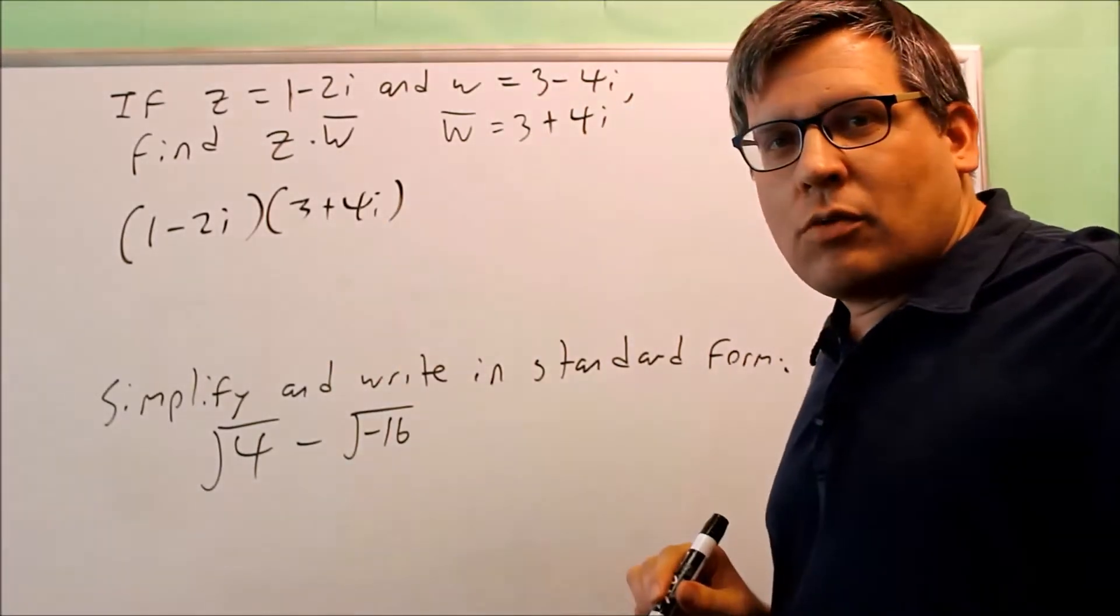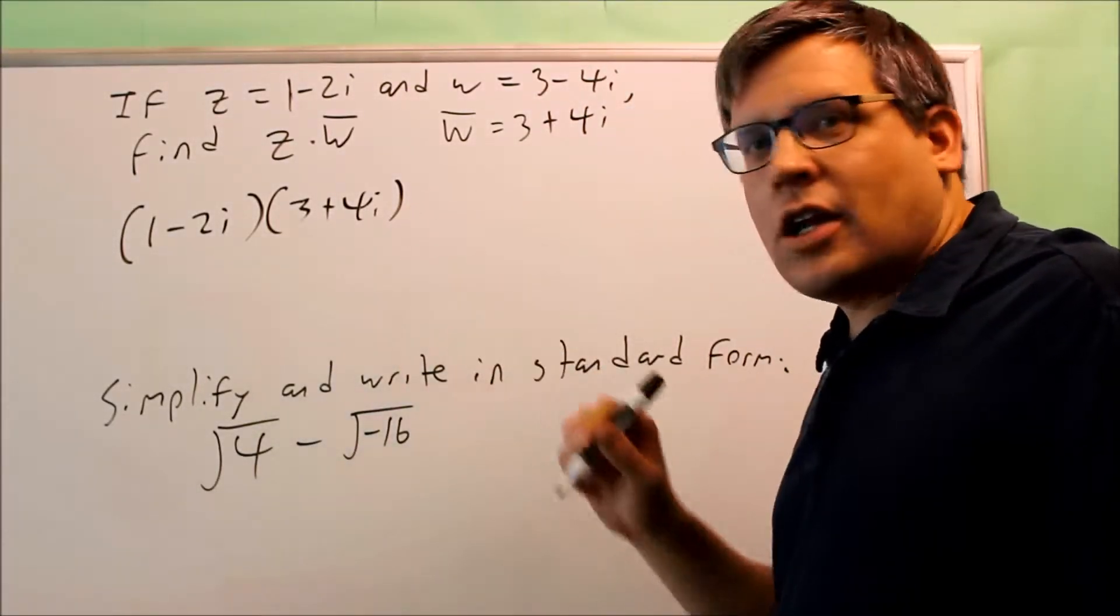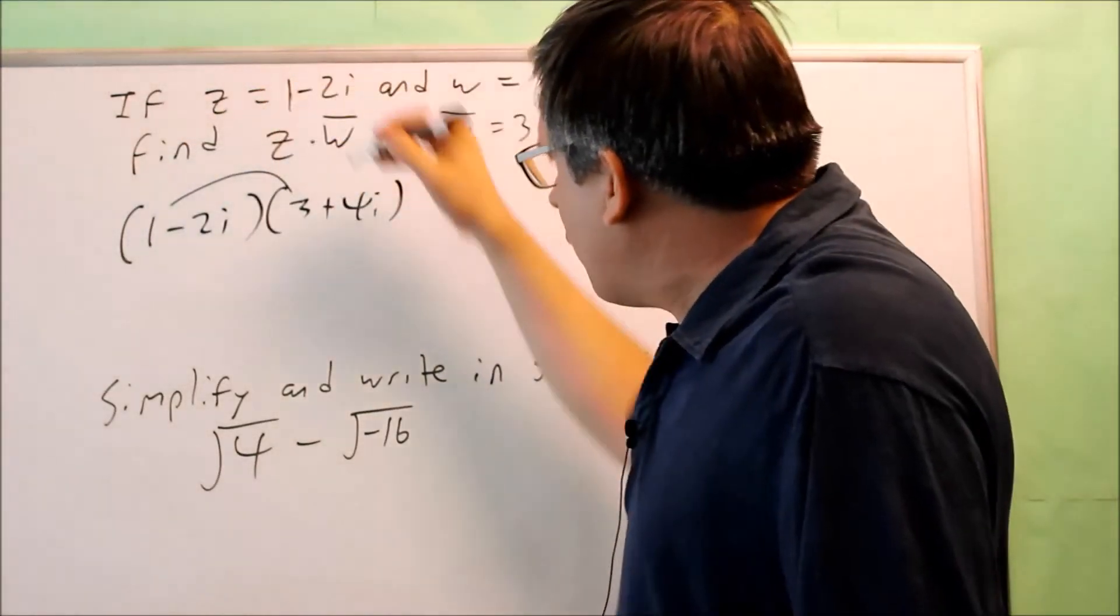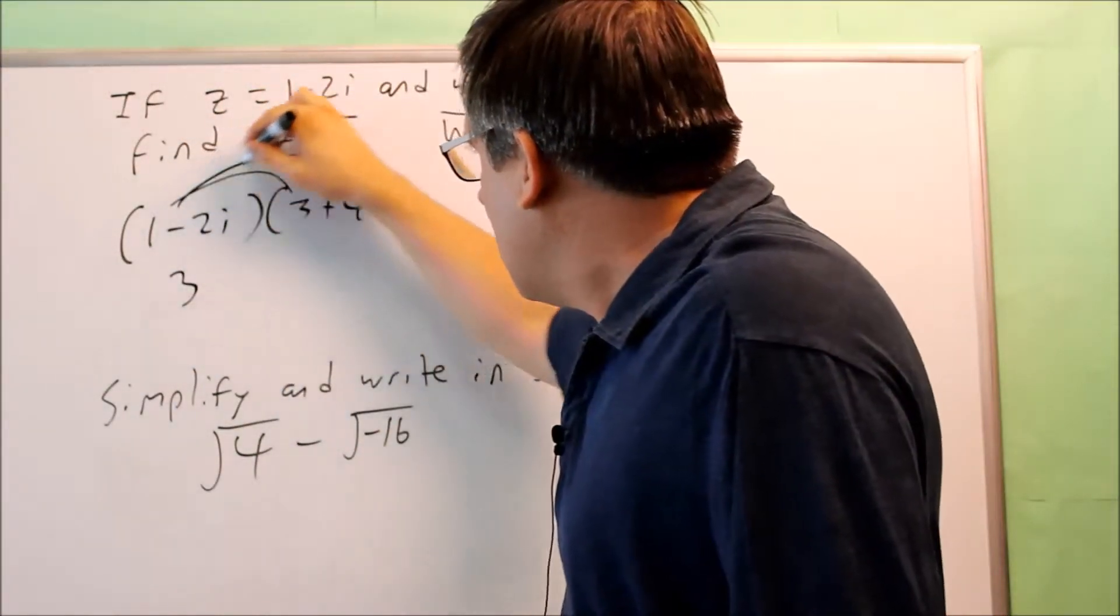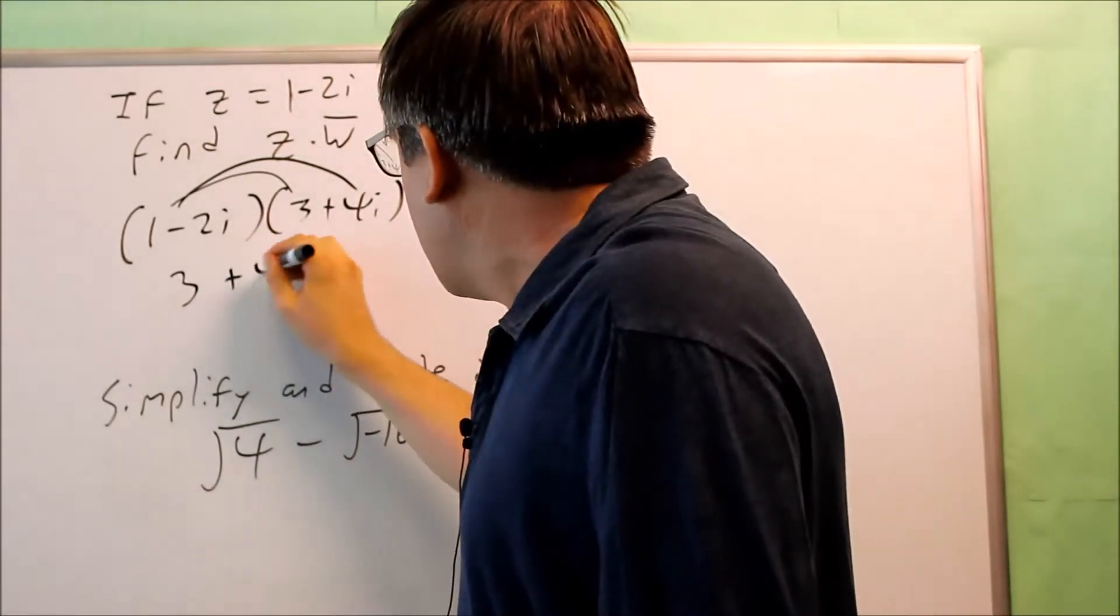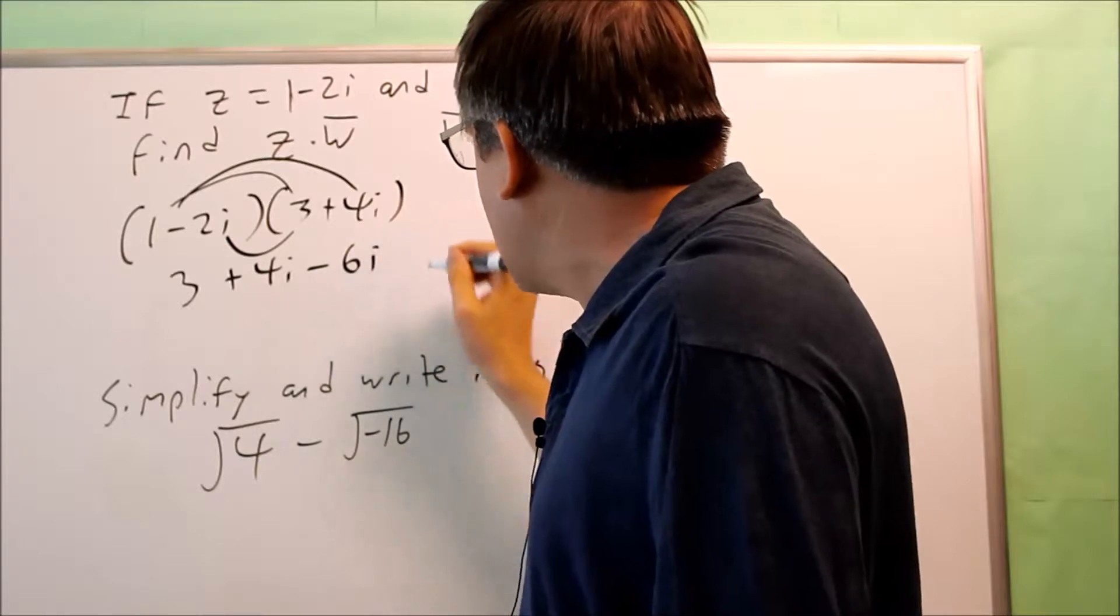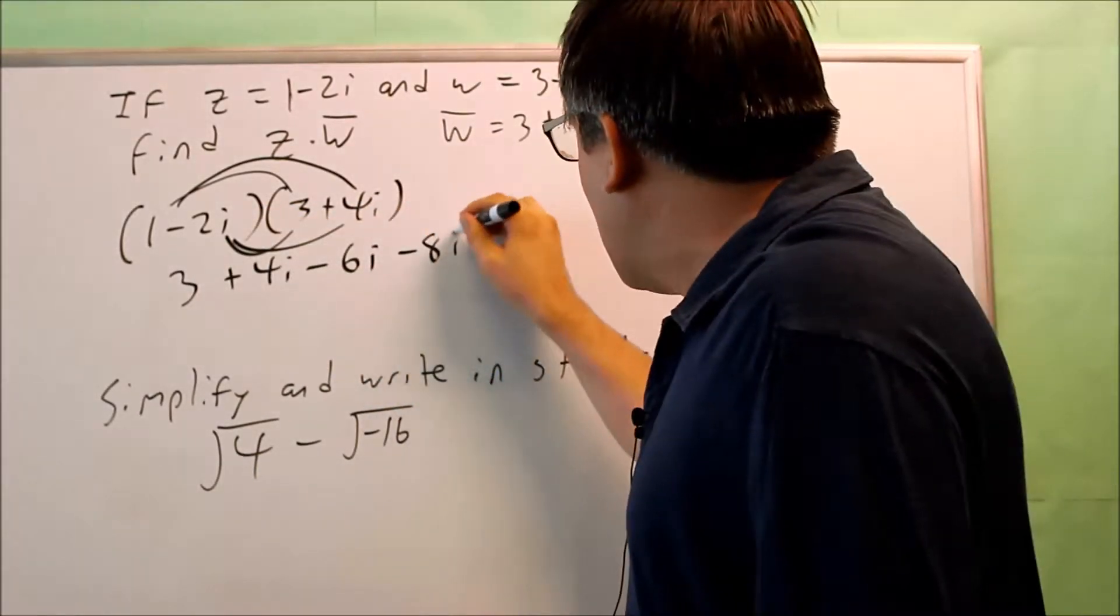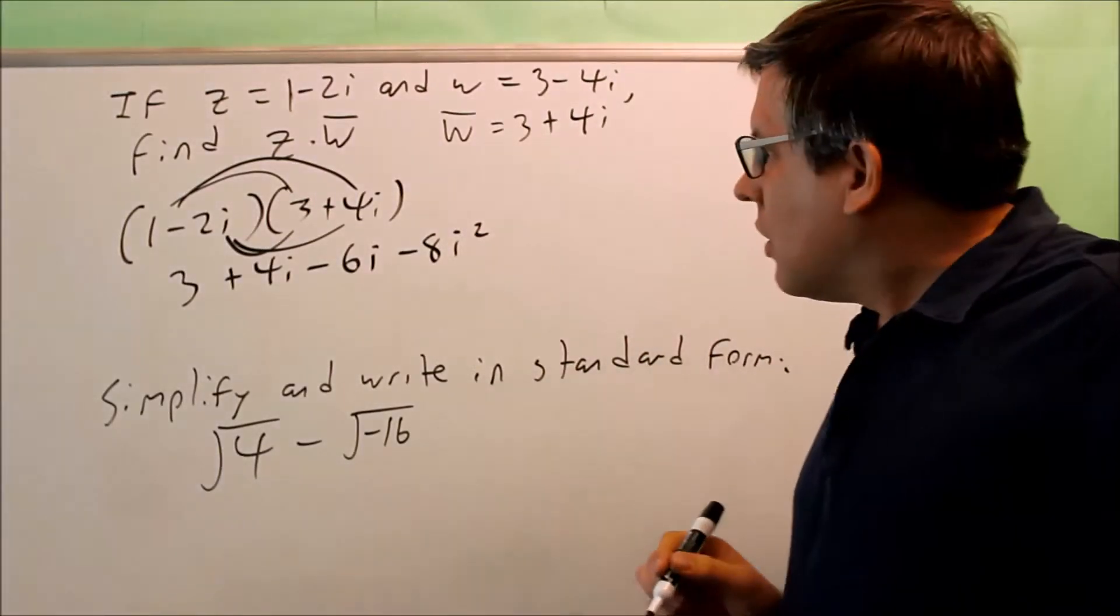So now we have another problem that we have to multiply out. We're going to multiply it again the same as we would do normal foiling if we had x's. Do the first terms, that's going to be 3. Do the outer, which is going to be 4i. Inner terms, negative 6i. And then finally we do negative 2 times 4, negative 8. Don't forget the square on that one.